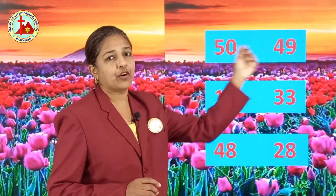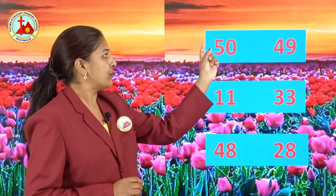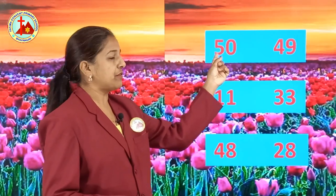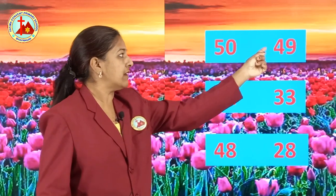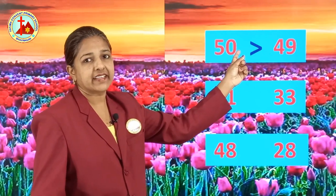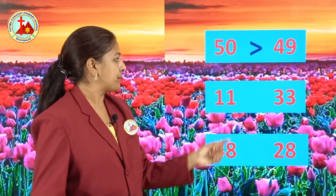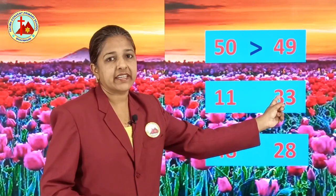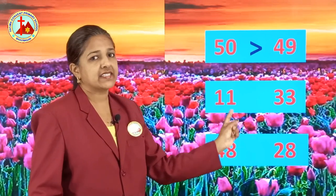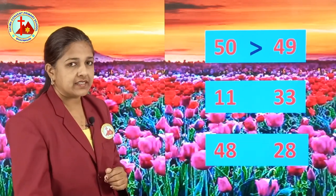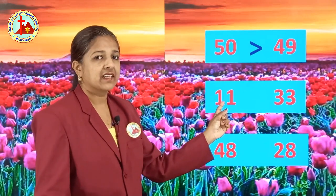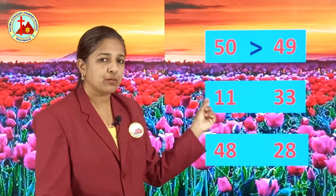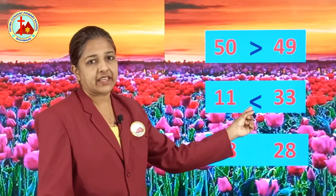Next, 50 and 49. 50 is the greater number and 49 is the lesser number. So 50 is greater than 49 — greater than sign. Next, 11 and 33. Here 11 is lesser than 33. 33 is the bigger number. 11 is the smaller number, so this sign you have to put.